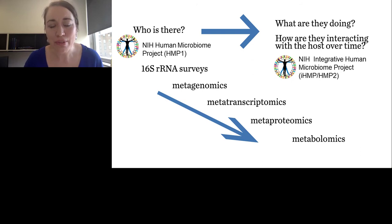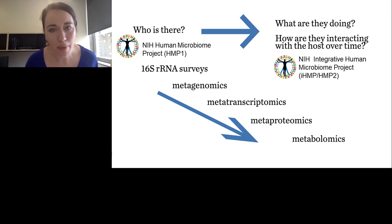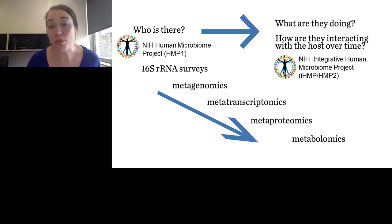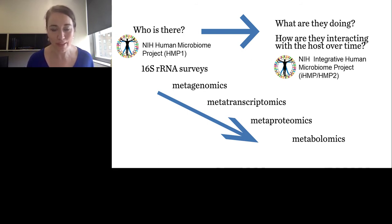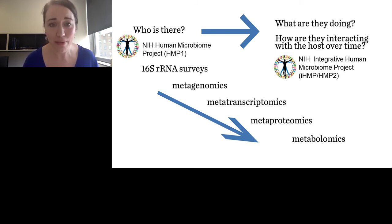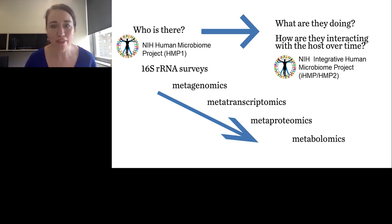Multi-omic science includes a lot of different omics technologies. 16S surveys give us a way to survey what organisms are present in the community. Metagenomics is all of the genes of all of the organisms. So if we take a vaginal swab sample and extract the DNA, we have human DNA, viral DNA, DNA from yeast, DNA from bacteria.